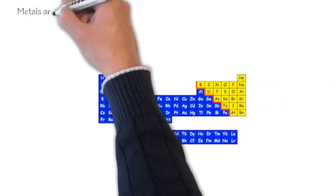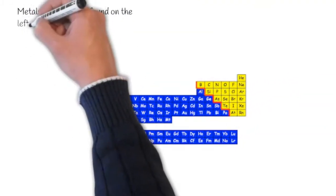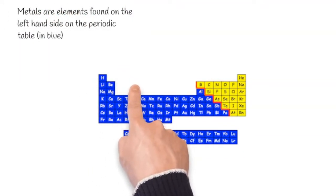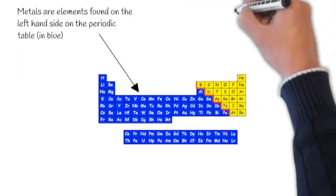Here is a diagram of the periodic table. Metals are elements found on the left-hand side of this, the ones in blue. They are all metals.